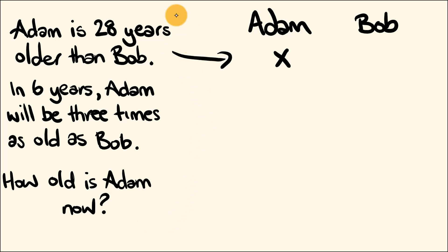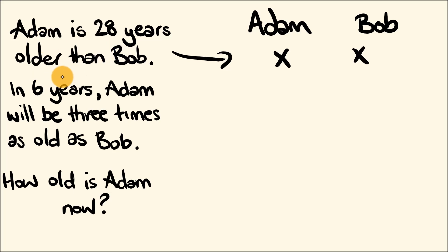First off, Adam is 28 years older than Bob. So if Adam is 28 years older than Bob, Bob is 28 years younger than Adam. If Adam is x years old, Bob is going to be 28 years less than this — he will be x minus 28 years old. So the first sentence's information is now captured.